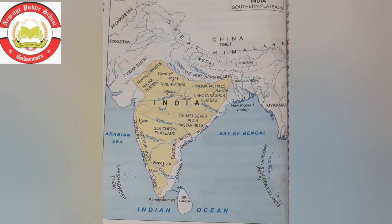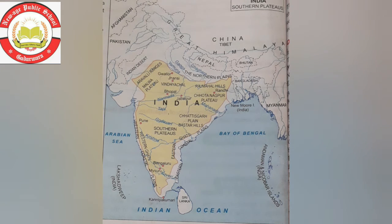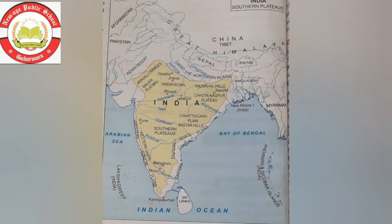Tamil Nadu lies to the east of Karnataka. Farming is the main occupation of the people. In the Nilgiris, coffee and tea are grown. The Integral Coach Factory is at Perambur. Kanchipuram is famous for silk saris. Chennai is the capital of Tamil Nadu. Bharatanatyam is the classical dance of Tamil Nadu. Pongal is the main festival. Famous temples include the Meenakshi Temple in Madurai and the Rameswaram Temple.